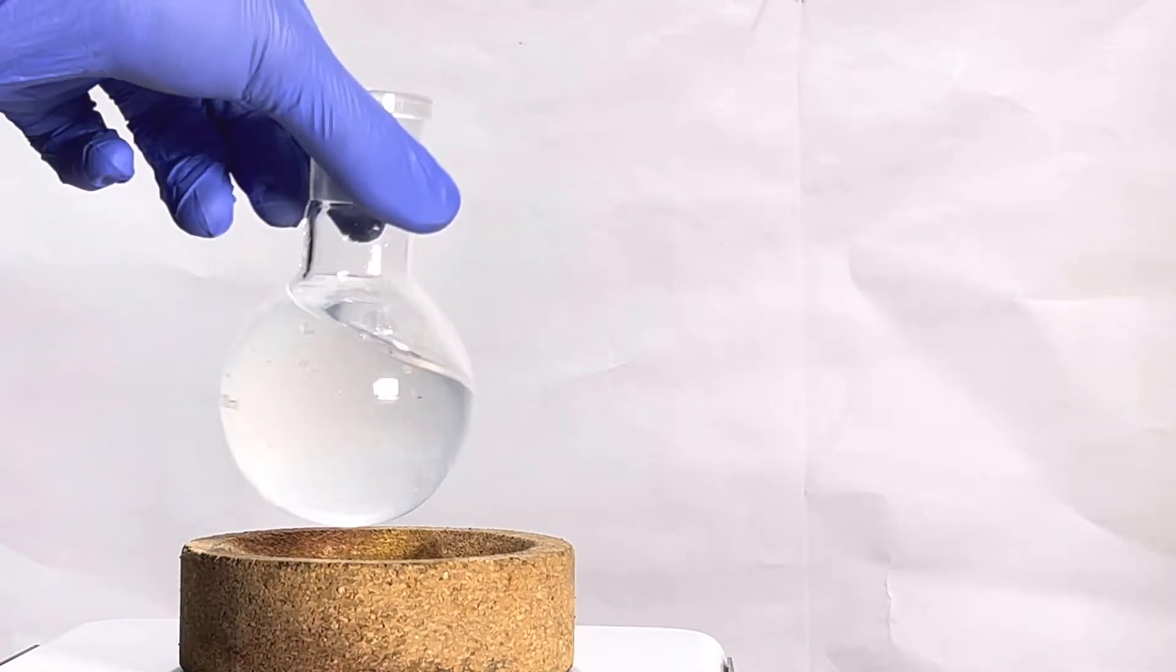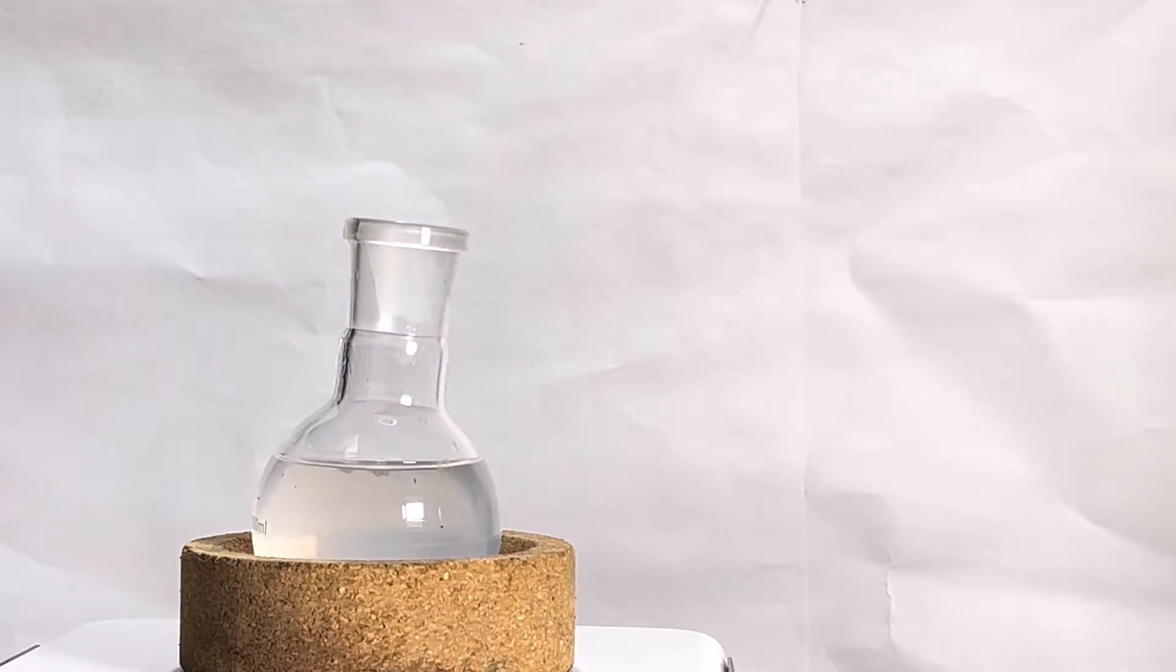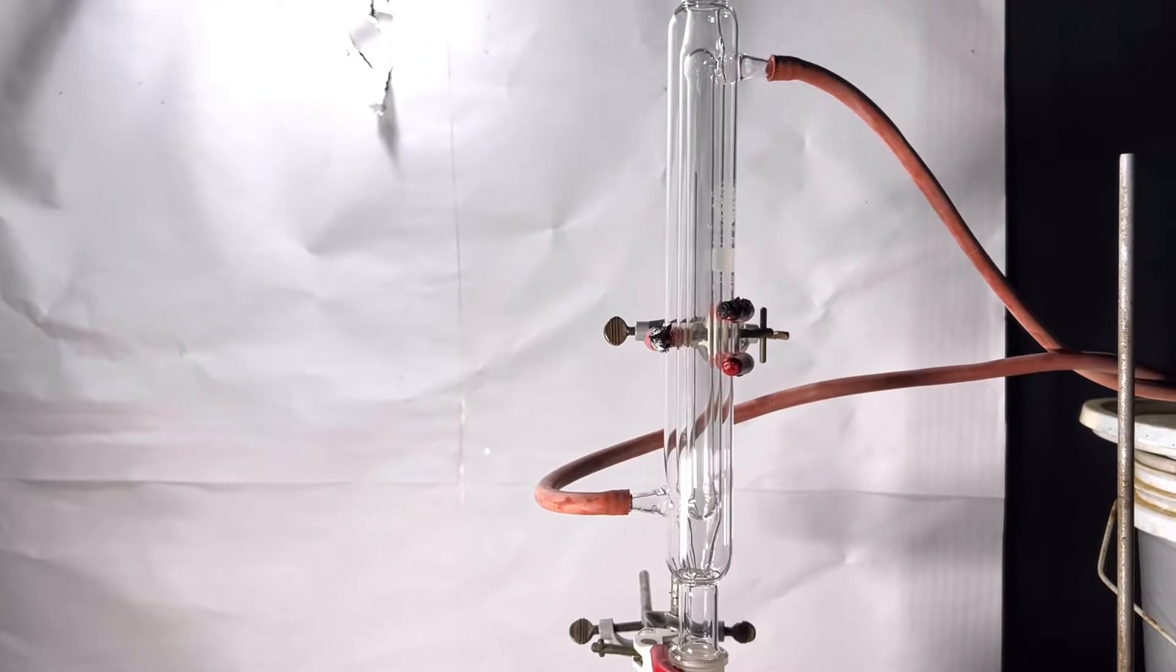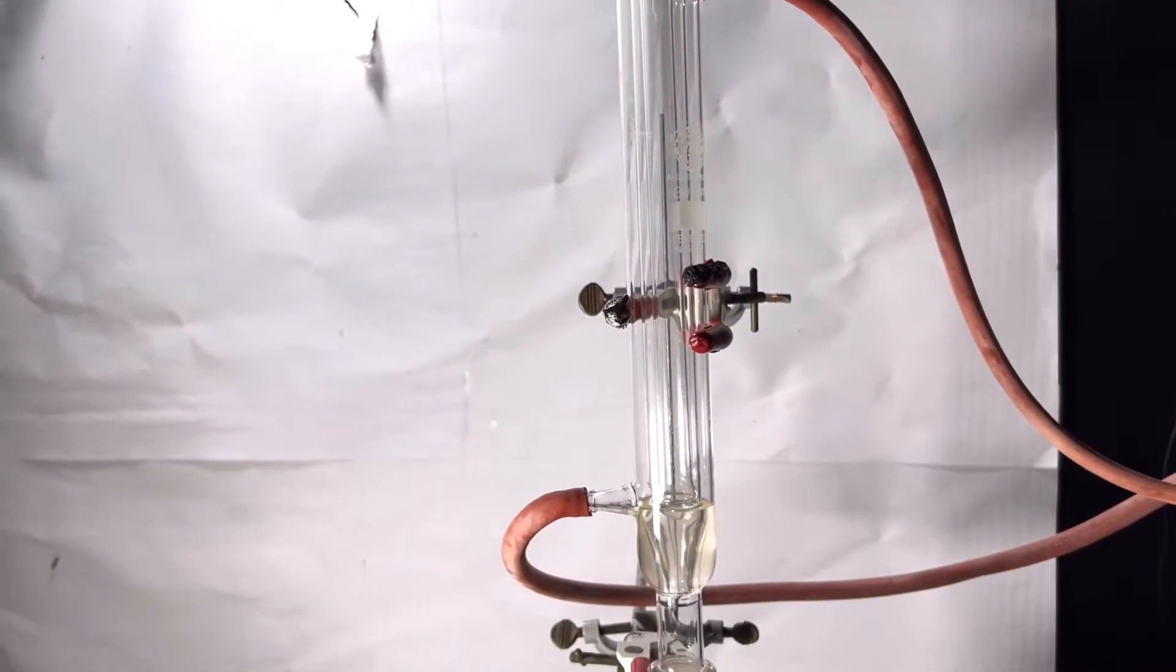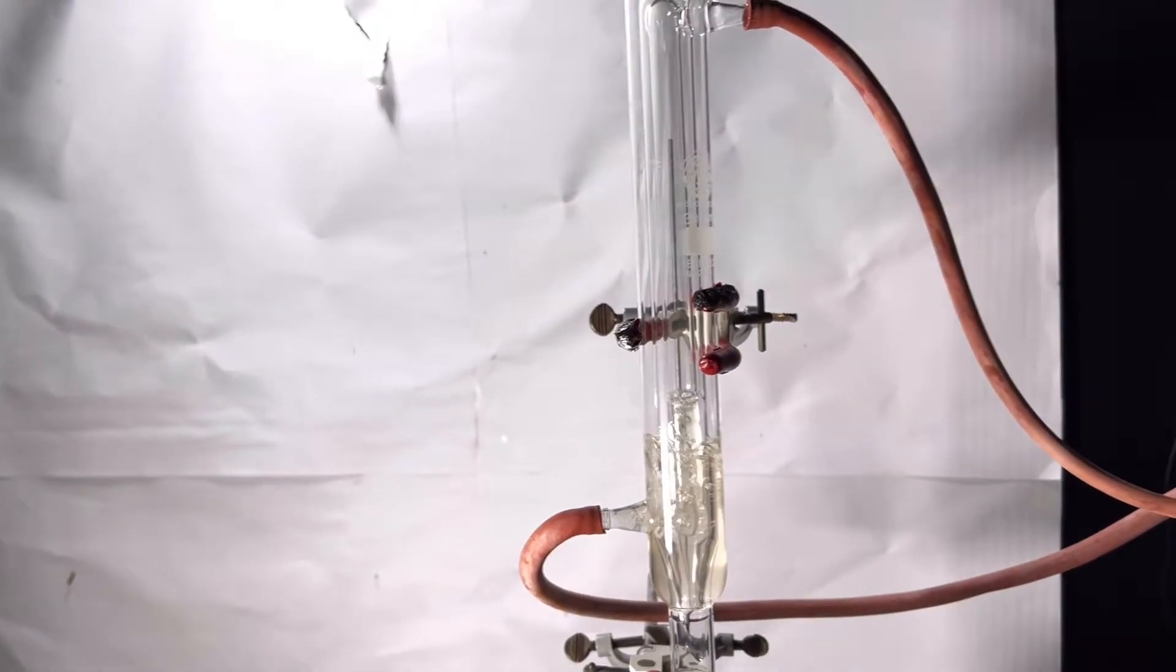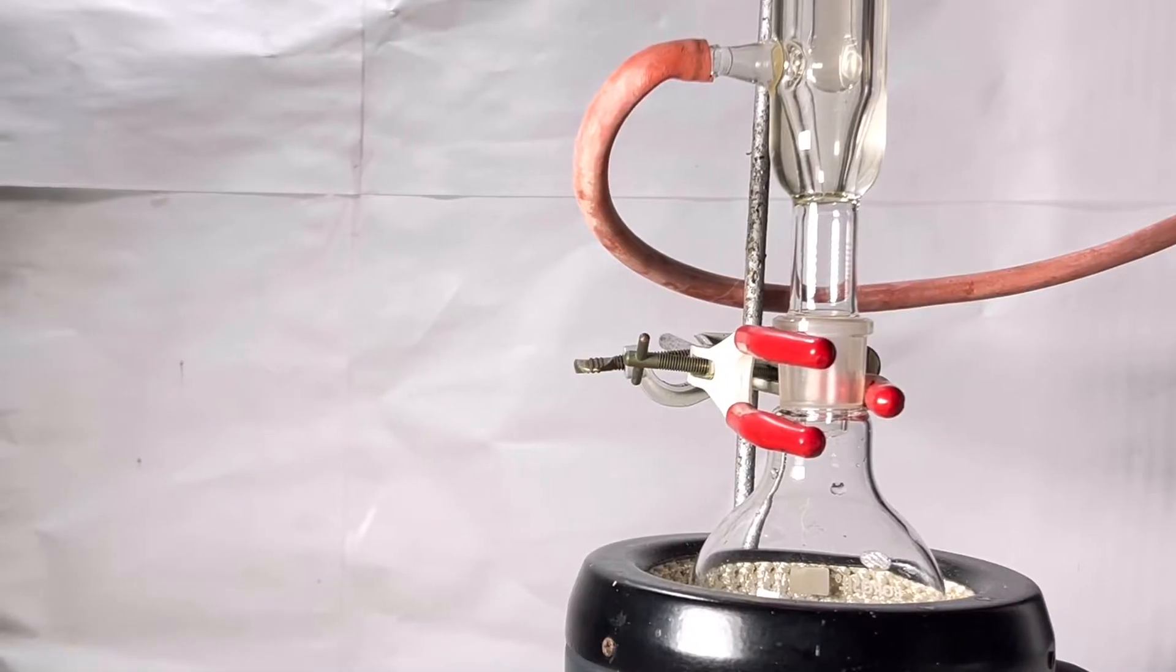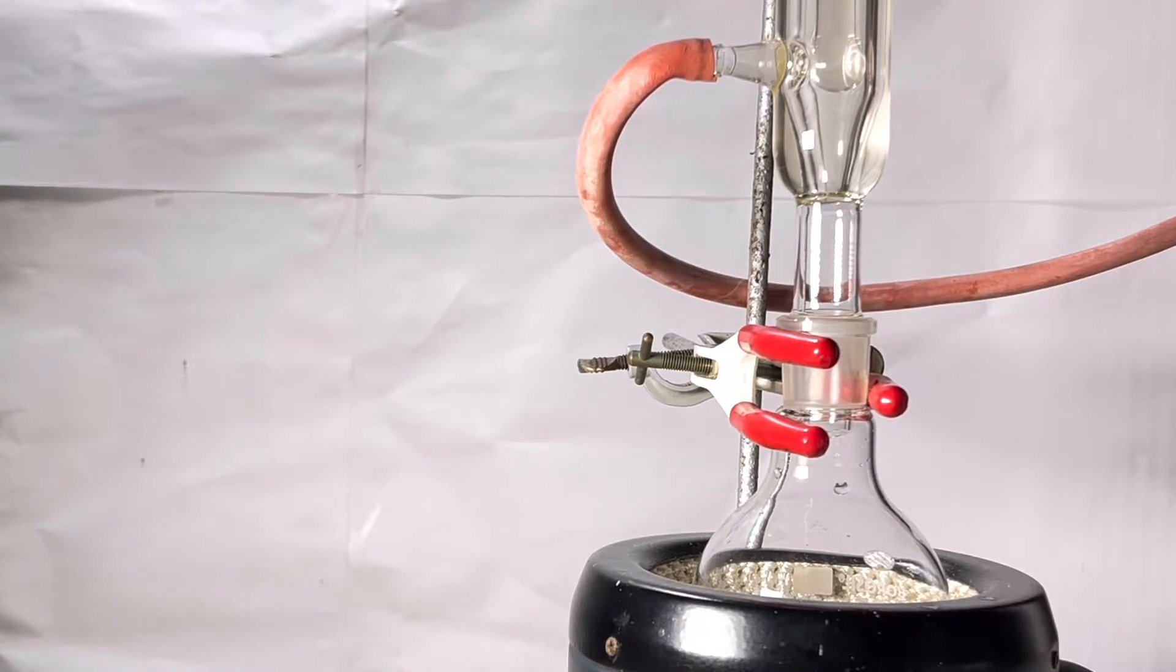Then 60 milliliters of methanol was added to it. Now the previous flask containing sodium cyanide solution is set up for reflux using a double surface condenser. Double surface condenser, as the name suggests, has two columns of water inside providing more surface area for the vapors to condense.